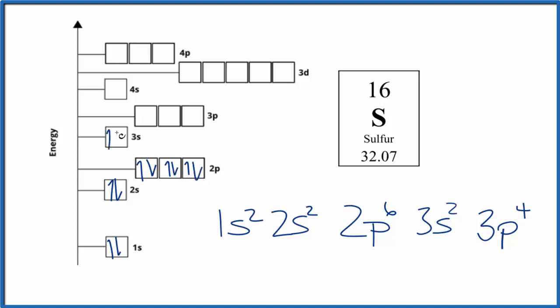3s². And then we end up with 3p⁴. So 1, 2, 3, and then we pair them up 4. And this is the orbital diagram for sulfur.